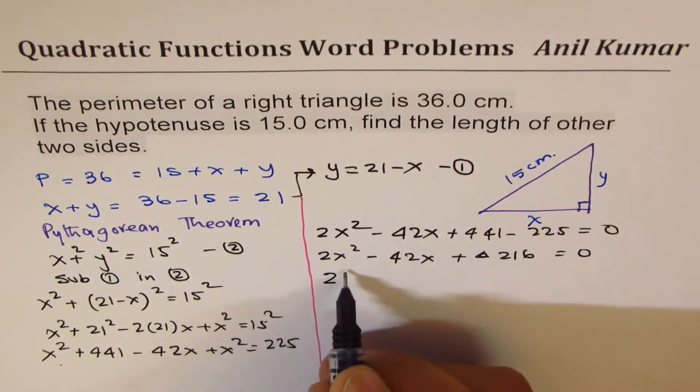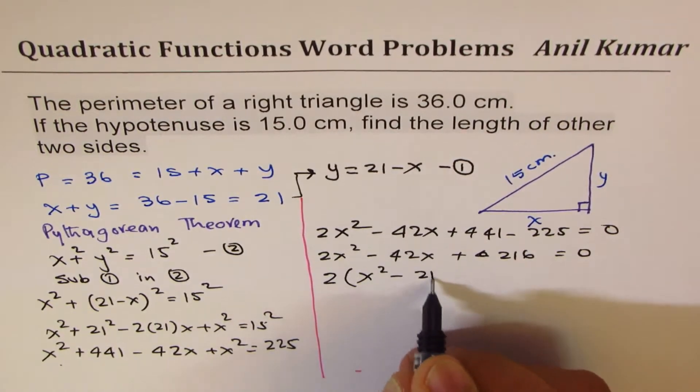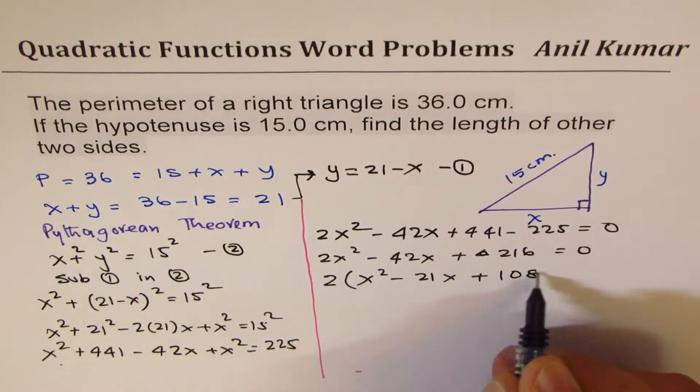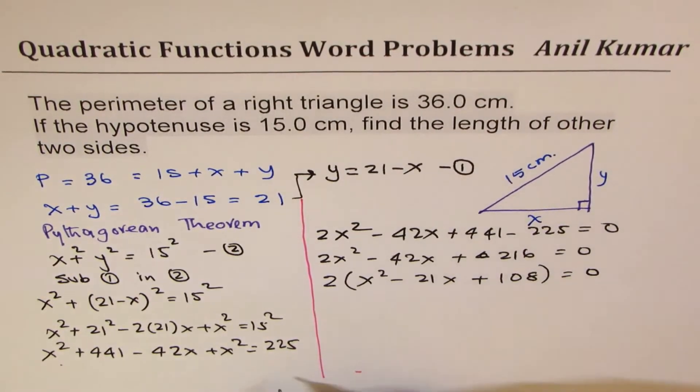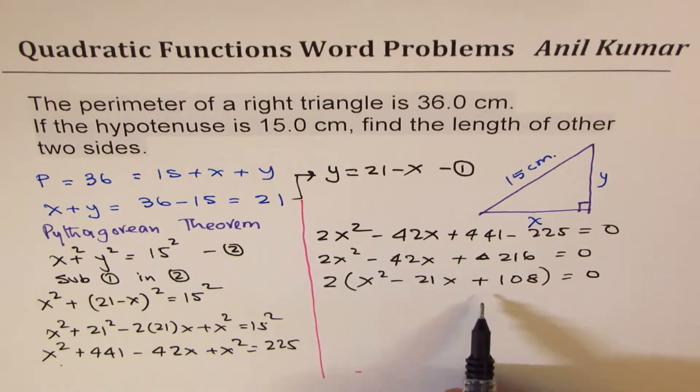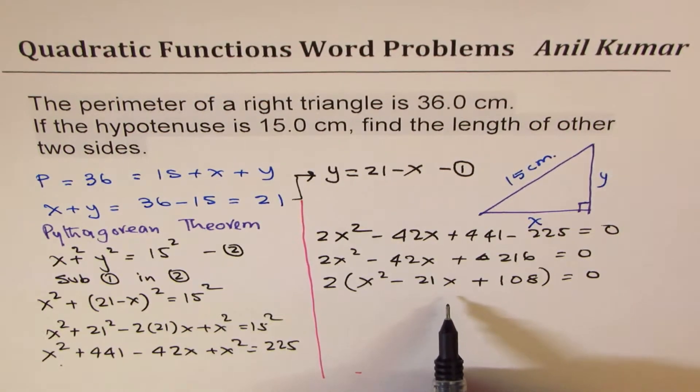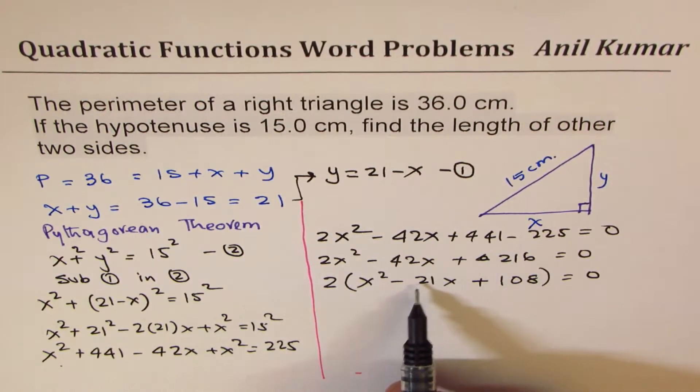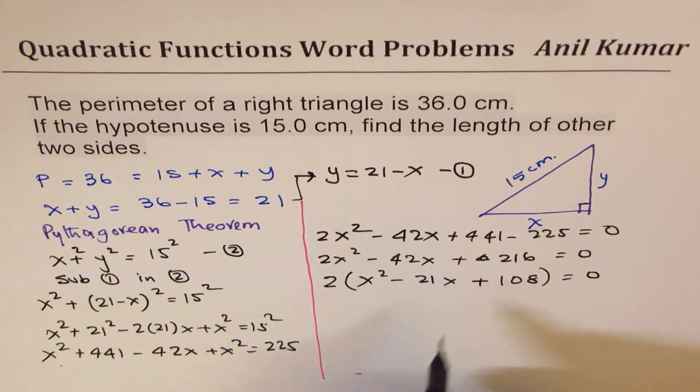At this stage you can use quadratic formula or you can factor. Let's try factoring it. 108 is 12 times 9 and when you add them you get minus 21.